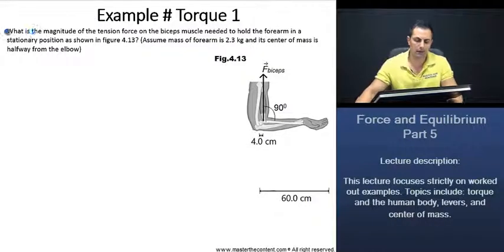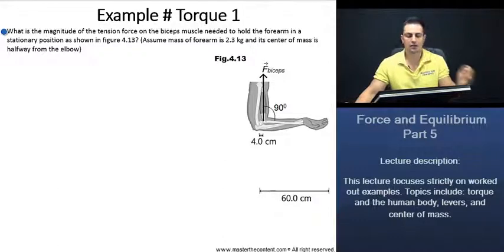Your career, our passion. Here's my pointer. Example torque one. What is the magnitude of the tension force on the biceps muscle needed to hold the forearm in a stationary position as shown in figure 4.13? Assume mass of the forearm is 2.3 kilograms and its center of mass is halfway from the elbow.